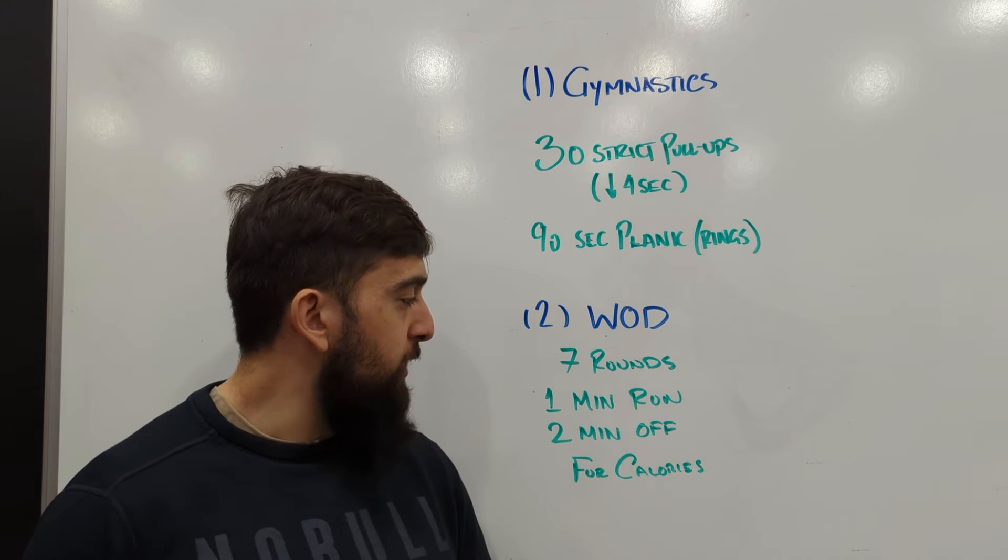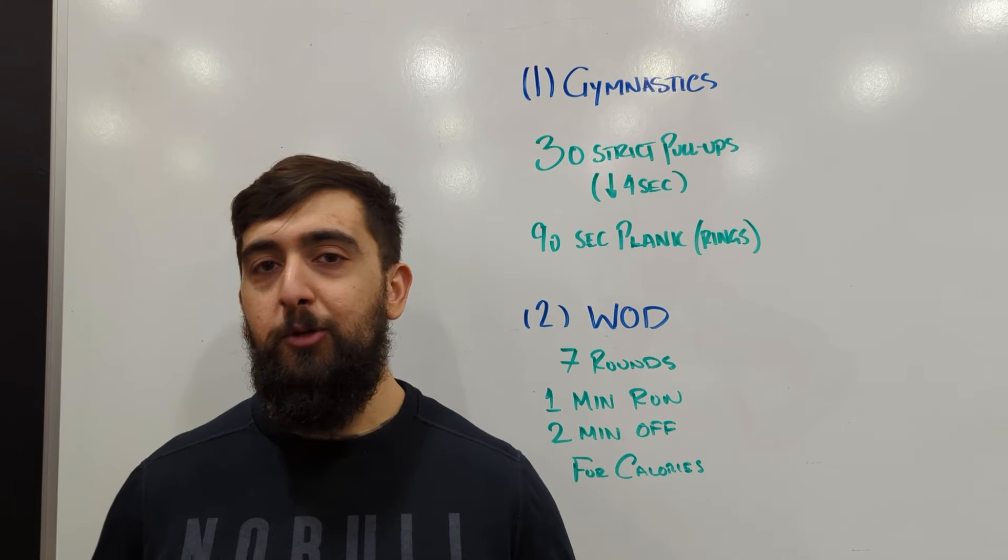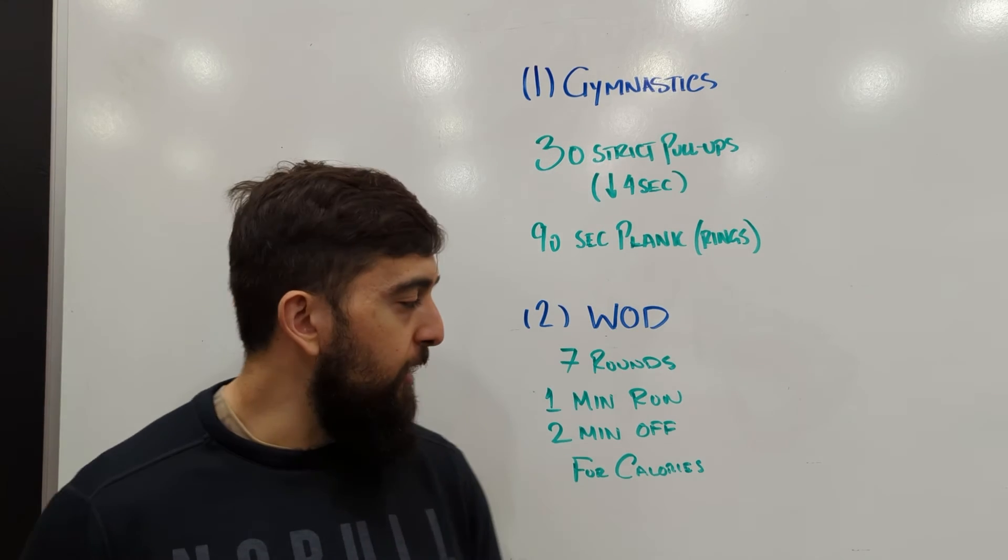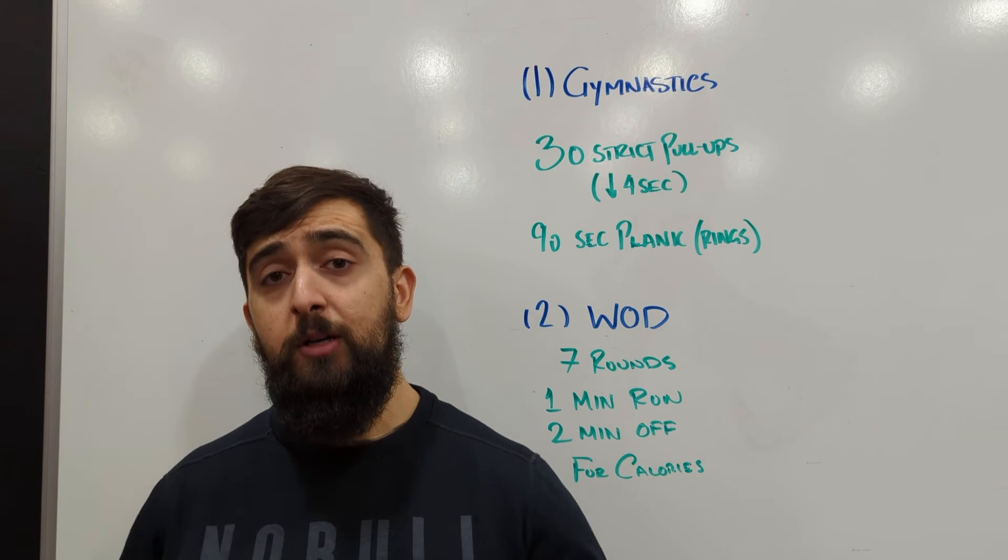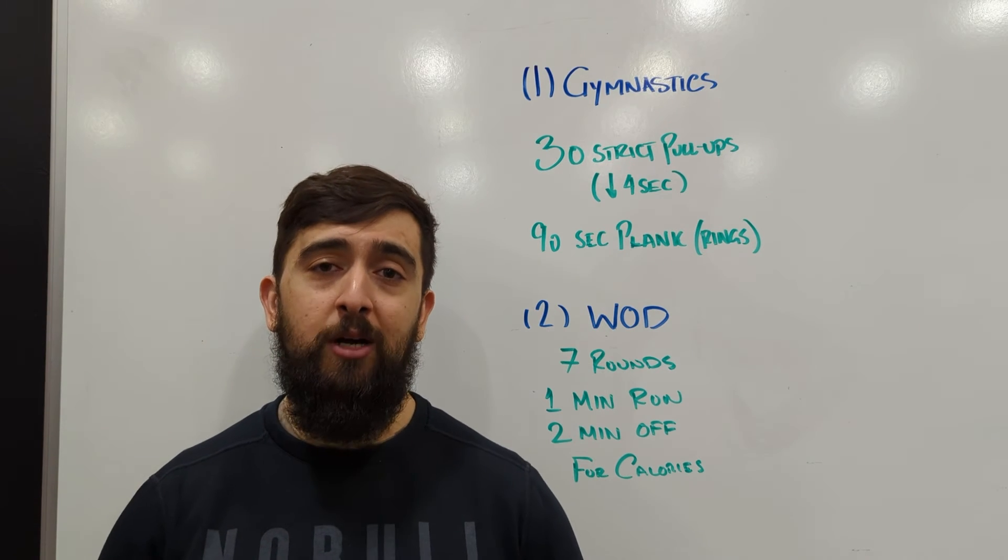After the workout we've got seven rounds of rowing. We're going to be doing one minute on of rowing, two minutes off. This one is for calories so we're trying to accumulate as many calories as possible.